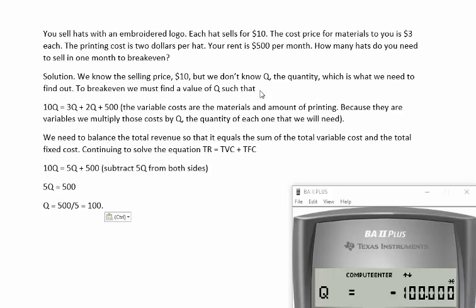And so we need to find Q such that ten, because that's the selling price, times this unknown quantity equals three, which is the materials, plus two, the printing cost. So three plus two are the variable cost and then 500 is the fixed cost. So 10Q equals 5Q, that's the three plus two, plus 500.